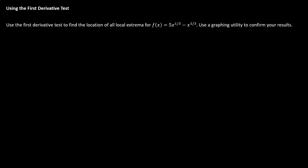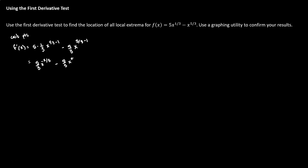Let's try another example using the first derivative test. We'll start by finding the first derivative to identify critical points. For this function we have f′(x) = 5·(1/3)x^(1/3 − 1) − (5/3)x^(5/3 − 1), which simplifies to (5/3)x^(−2/3) − (5/3)x^(2/3).